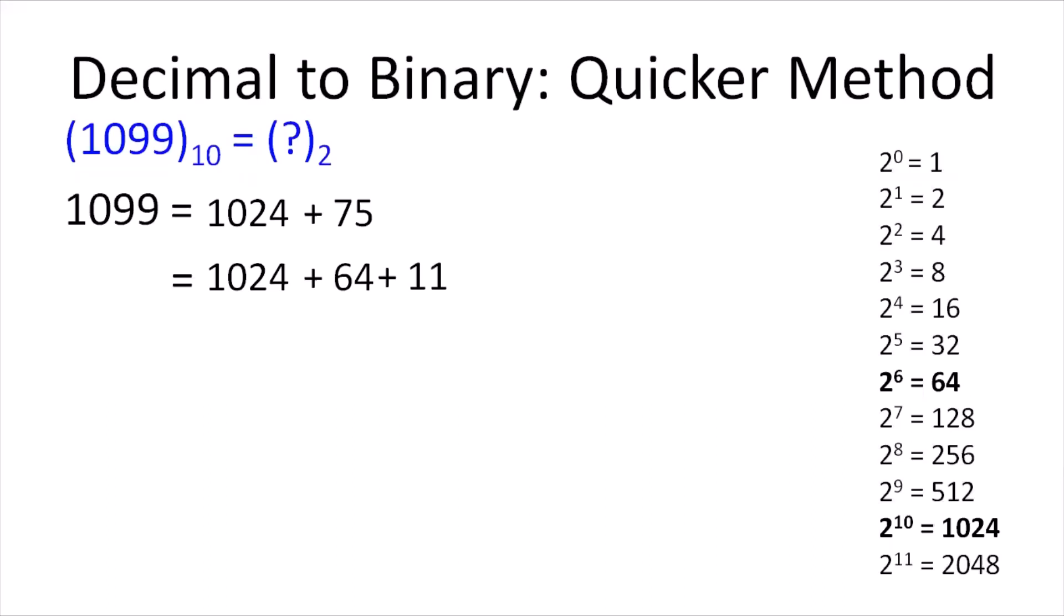Using a similar approach, we next find the highest power of 2 which is less than 11. We see that's 8. So 11 is split next as 8 plus 3. Finally, we again split 3 into 2 plus 1, where both 2 and 1 happen to be powers of 2.